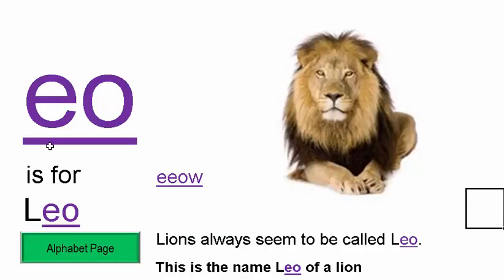EO — EO is for LEO. Lions always seem to be called Leo. This is the name Leo of a lion.